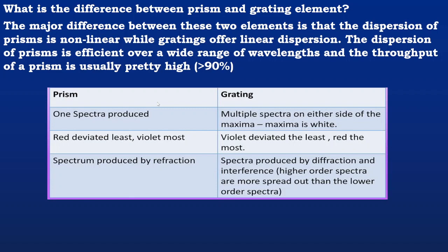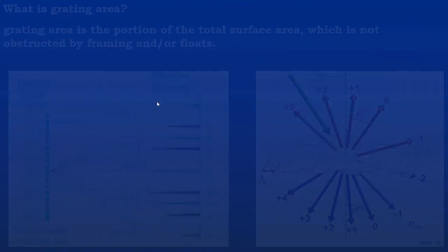But in grating, multiple spectra on either side of the maxima is white, and violet deviated least and red is deviated most, which is inverse for the prism. Spectra produced by diffraction and interference.